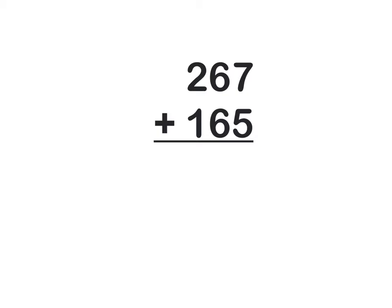First, let's start with the traditional method of adding that most of us are familiar with. I'll add the numbers 267 plus 165. Okay, so to solve this, I know the first thing I need to do is to start on the right side of the numbers, the right side of the equation.